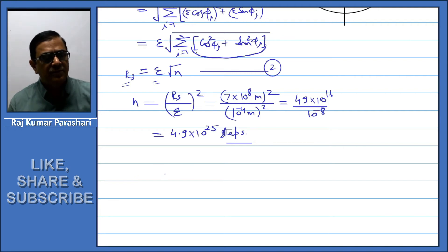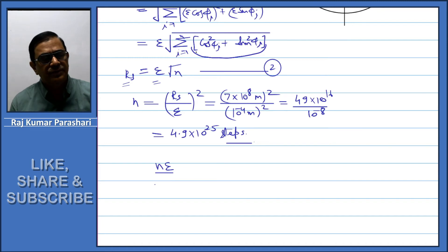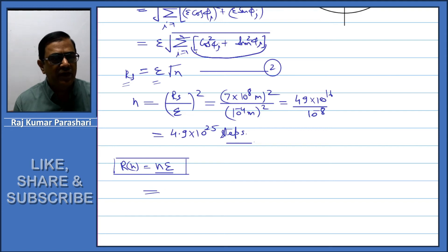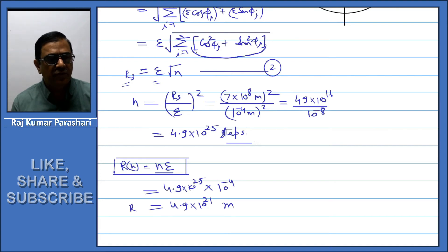Further, during each step the distance covered is ε. If we multiply ε by n, we get the total distance covered by the photon as it travels from the center to the surface. This equals 4.9×10²⁵ multiplied by ε = 10⁻⁴ meters, which gives 4.9×10²¹ meters. This is the total distance covered by the photon as it reaches the surface of the Sun.